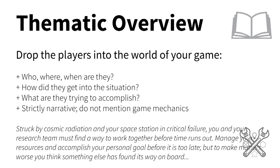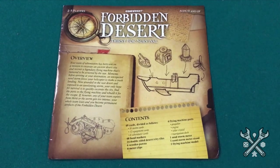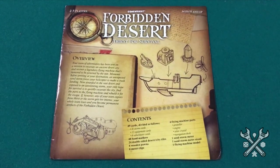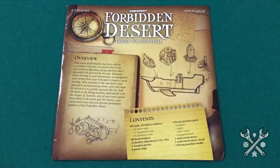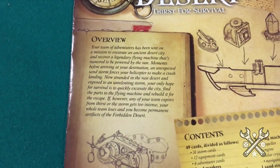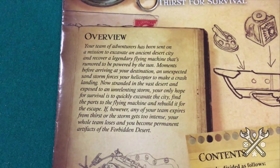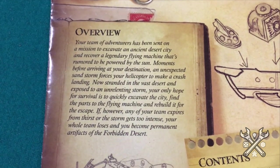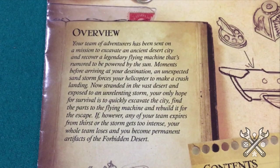The thematic overview is what gets your players into the setting of your game. Things to touch on might include who, where, and when they are, how they got into the situation, and what they're trying to accomplish. The thematic overview is a little bit different than a gameplay overview in that you do not want to mention any game mechanics by name. This is the storytelling aspect — the general impression you want to give first thing about what the game is about. I like to keep this only a couple sentences long, but if your game really thrives on the lore or mythology or story, feel free to make this a whole page. A lot of gamers will gloss over this section, but for players who appreciate a good theme, they'll be happy you put time into setting up the world of your game.